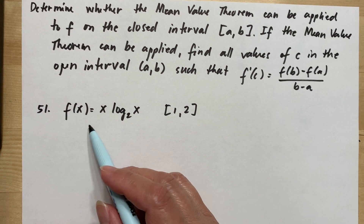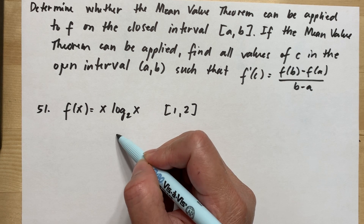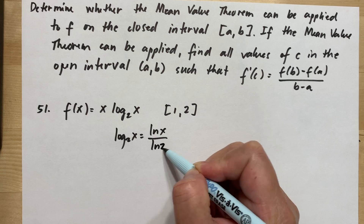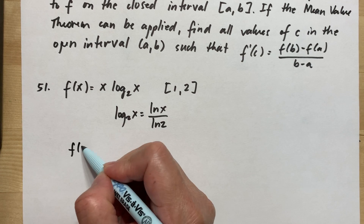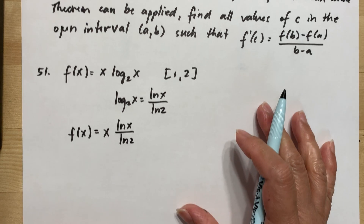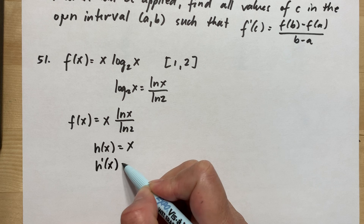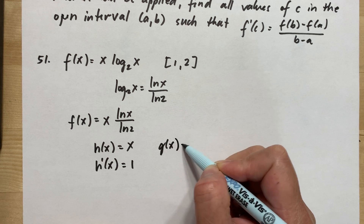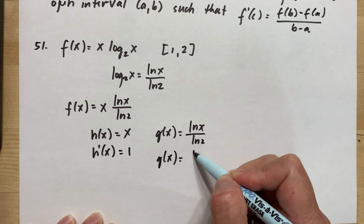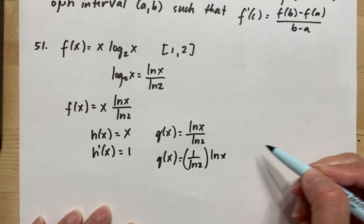Let's get the derivative of the function x·log₂(x). We can change log₂(x) into ln(x) over ln(2). So our function f(x) is equal to x·ln(x) over ln(2). This is a product rule, so let H(x) = x with derivative 1, and G(x) = ln(x)/ln(2), which we rewrite as (1/ln 2)·ln(x), since 1/ln(2) is a constant.